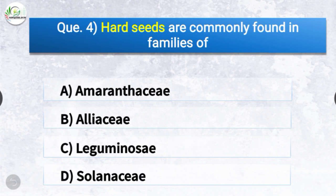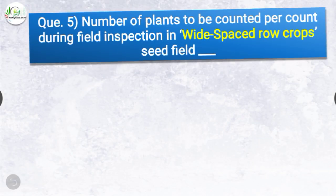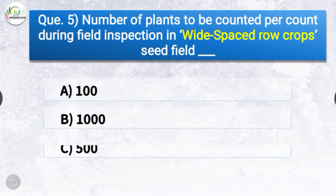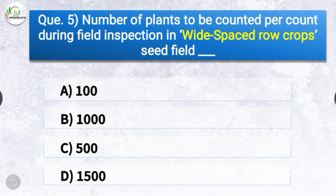Question number four: Hard seeds are commonly found in families of Leguminosae. The correct answer is option C — Leguminosae. Hard seeds are commonly found in the families of Leguminosae.